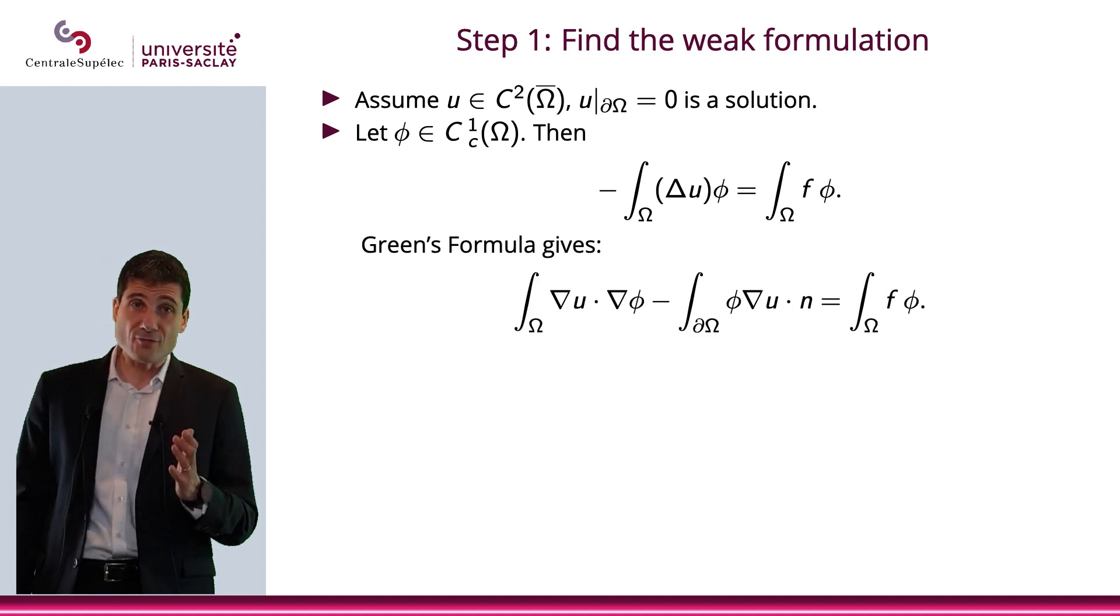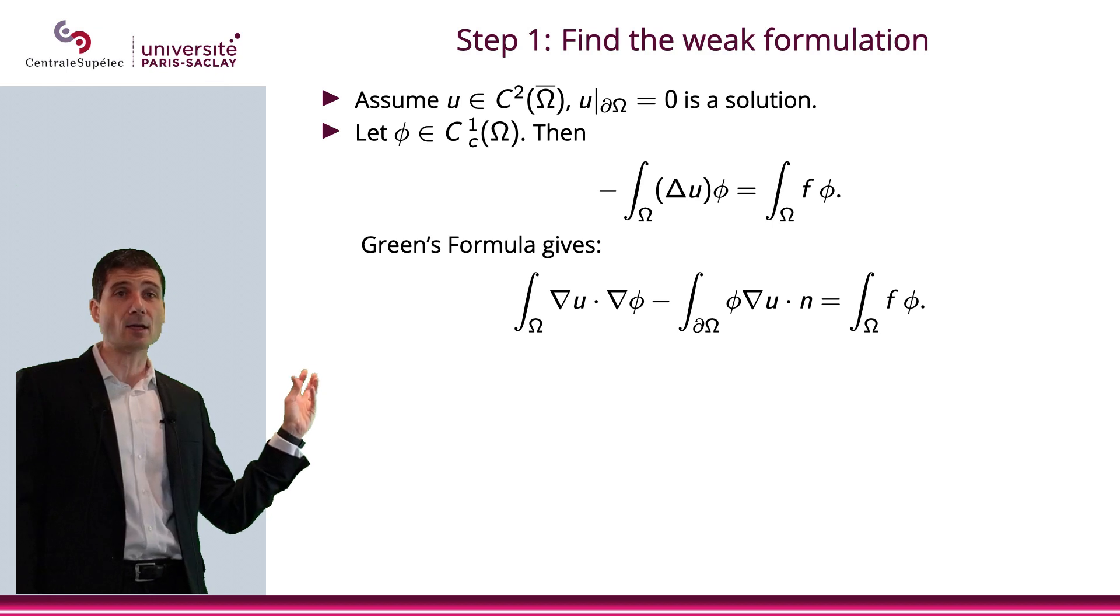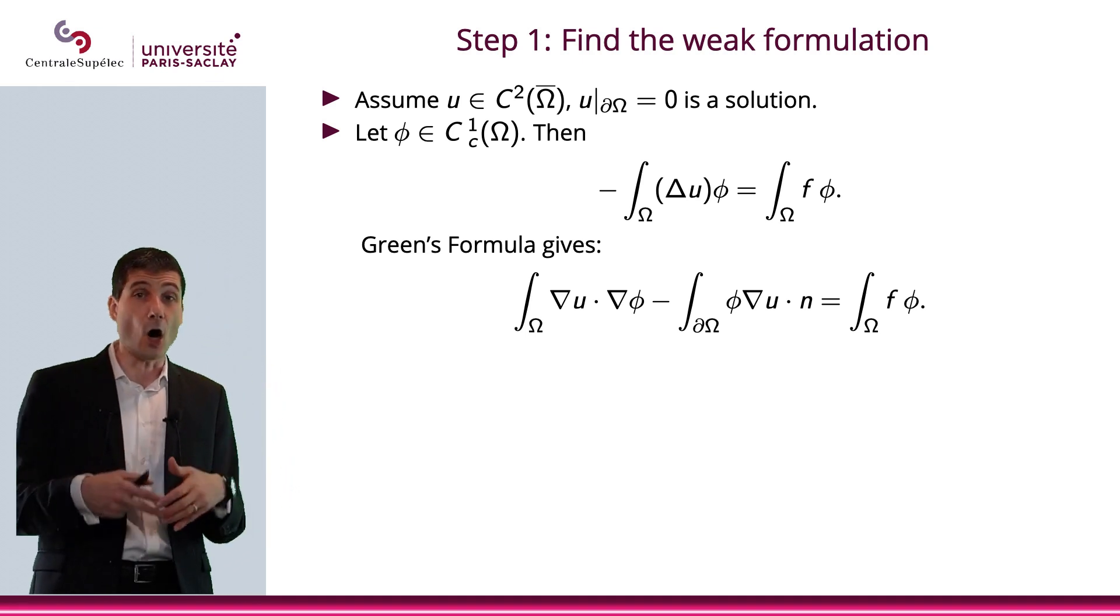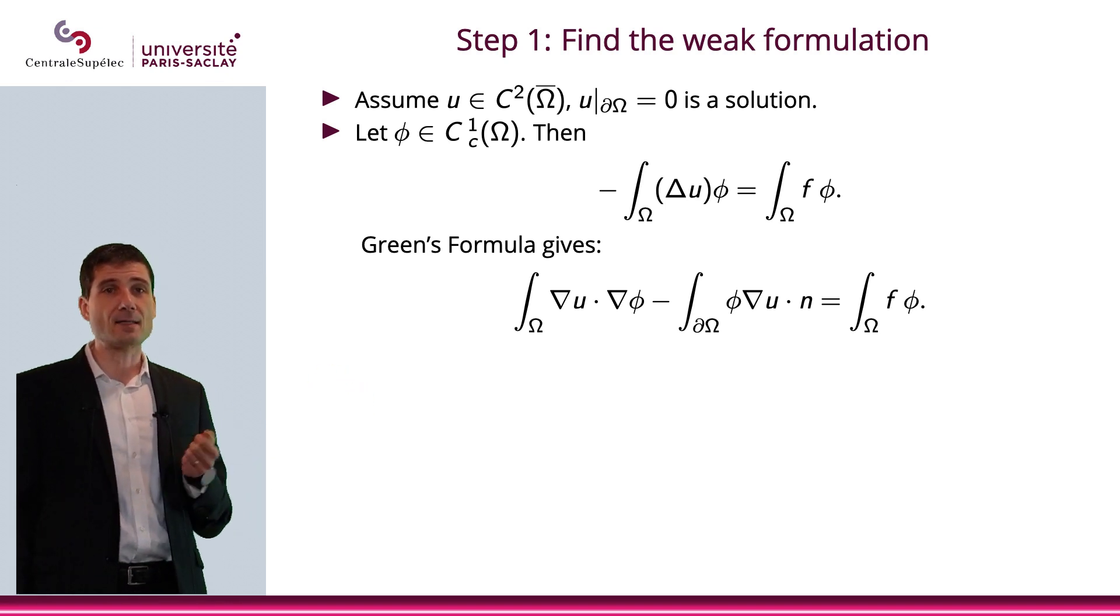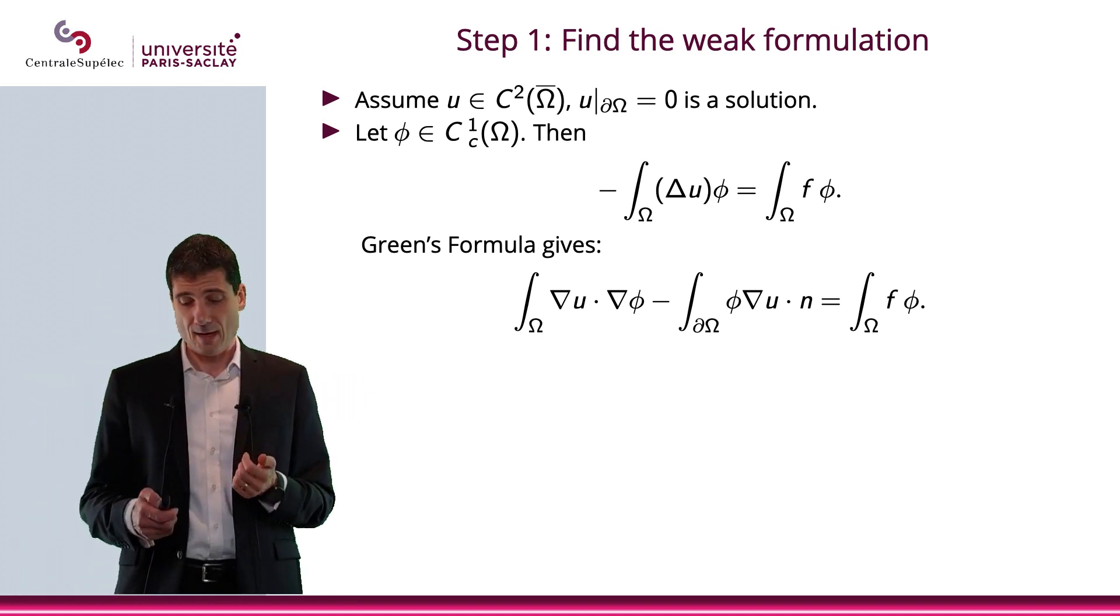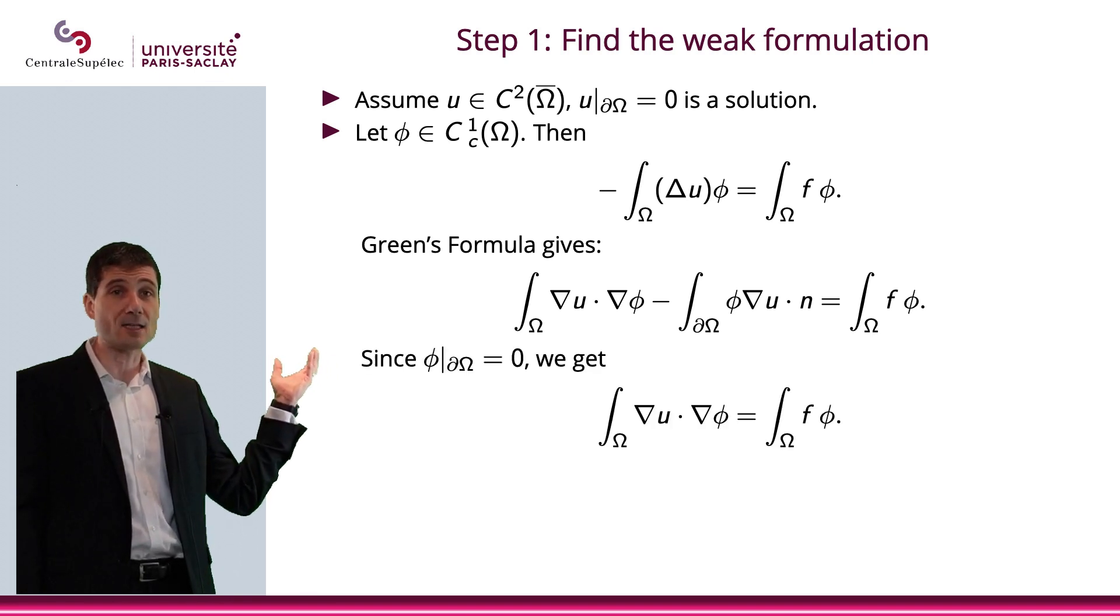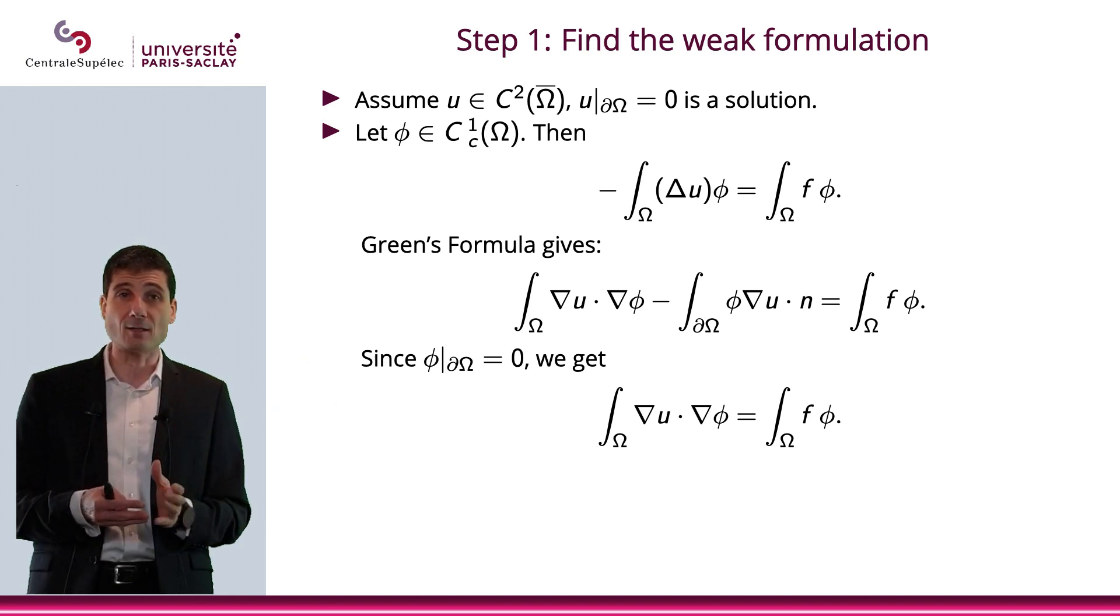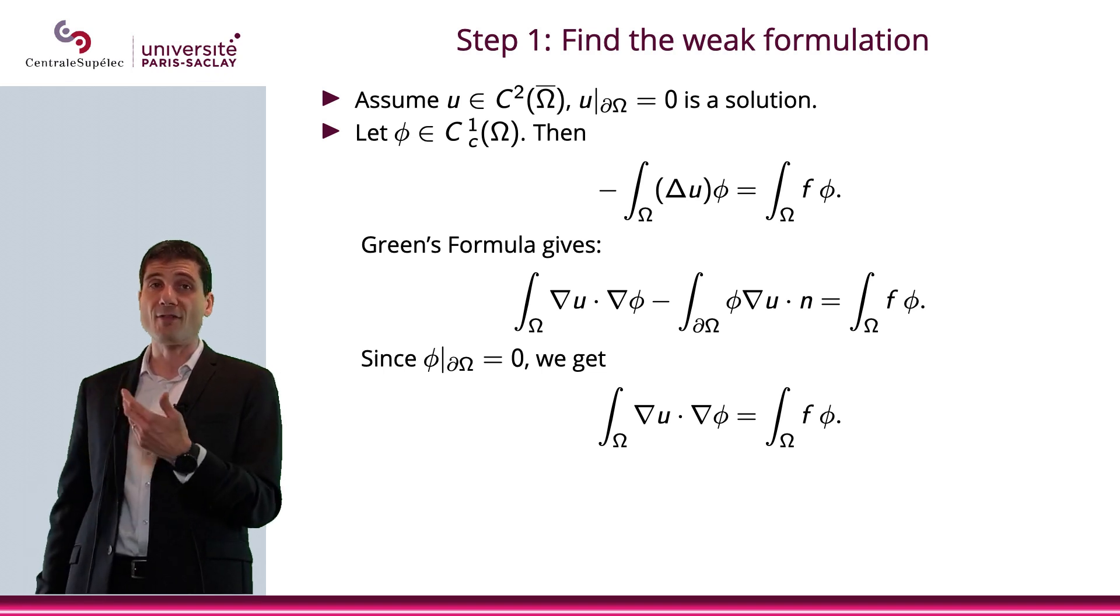Then I use Green's formula. When I do Green's formula, my Laplace operator turns into del on the other side. So I get del u del phi, the scalar product in R^d, R^2 in this case, minus the normal derivative on the boundary equals the integral over omega of f phi. I will use again the fact that phi has compact support to remove that integral on the normal derivative. Because phi vanishes on the boundary, all I get is the integral over omega of del u del phi equals the integral of f phi.